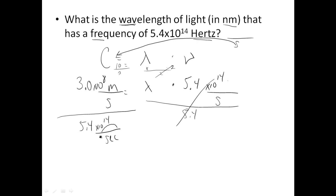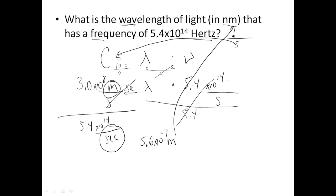My units are going to flip-flop — I take the reciprocal, they cancel, and I'm left with meters. When I get my answer on the calculator, it's 5.6 times 10 to the negative 7th meters. That's mathematically correct, but the answer wants it expressed in nanometers, so you have to go one more step. Put meters on the bottom and nanometers on top to cancel out meters. 1 meter equals 1 times 10 to the positive 9th nanometers. The final answer is 560 nanometers.